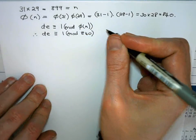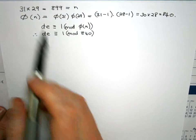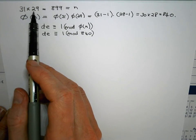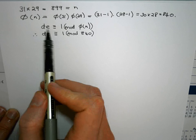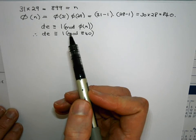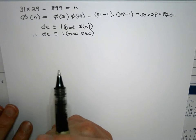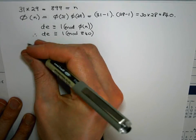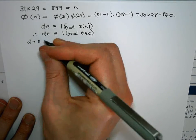So in a question you would typically be given your two prime numbers and you'd be given one of d or e and you would be asked to find the other one. So suppose you are given that d is equal to 11.